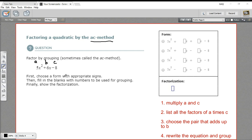The steps in using the AC method are to multiply A times C, so in this case, let's just list this: A equals 5, B equals 6, and C equals negative 8.